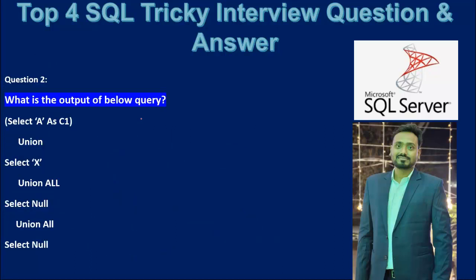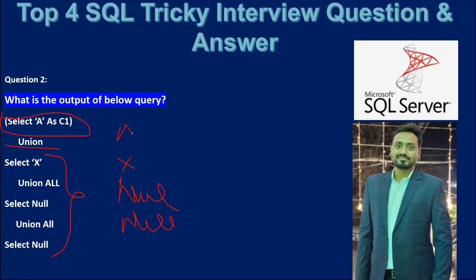Let me jump to the next question. The second question asks: what is the output of the below query? We have a first value, then UNION ALL with three values — x, null, and null — and then UNION with a. So the interviewer wants to know whether null will appear two times or not.